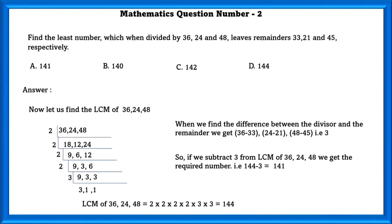When we find the difference between the divisor and the remainder, we get 36 minus 33, 24 minus 21, and 48 minus 45, that is 3. So, if we subtract 3 from the LCM of these numbers, we can get the required number, that is 141.